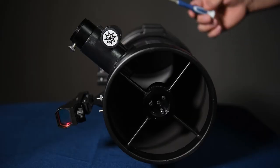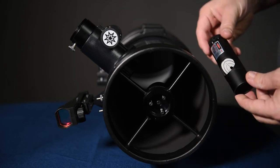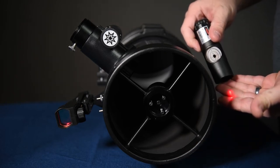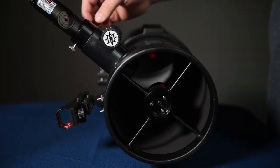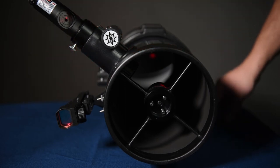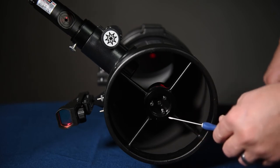Now that you've reassembled the scope without the optic, you'll want to take your laser collimator, turn it on, and insert it. Tighten it and begin collimating by using these three screws here.